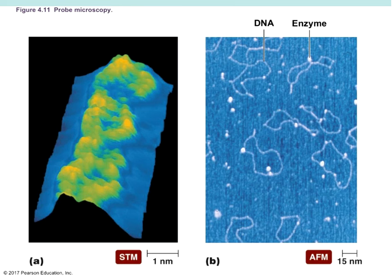Probe microscopy is typically used to look at very small things, specifically molecules — DNA, enzymes, or proteins. We won't be using it in this class, but it is also a form of electron microscope.